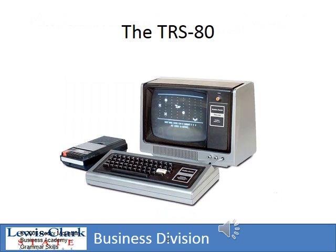The Apple computer was an immediate success with engineers and scientists. It didn't really become a business success until they came out with a program called VisiCalc — a spreadsheet program that allowed accountants to work with numbers. Then it became very successful, and as anything successful does, it breeds competition. Between 1977 and 1983, everybody and their brother seemed to come out with a new computer.